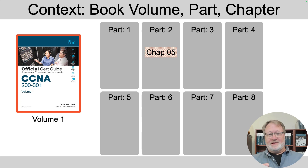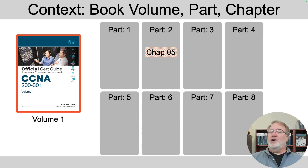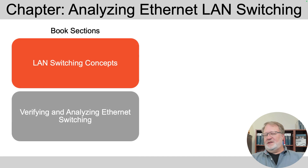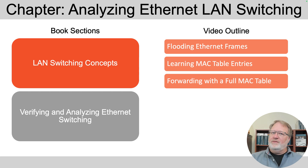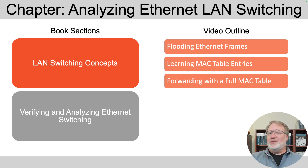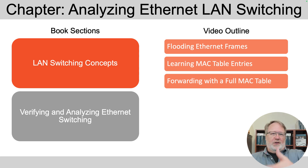Let me set the context. These videos always follow the outline of my Cisco Press CCNA books. This video happens to match Volume 1, Part 2, Chapter 5's first section. You can see the section titles from the book there on the left. In this video, I'm going to reverse the order versus the book and talk about flooding first, which is interesting because it turns out LANs won't work without that. Then about MAC learning, and finally about forwarding when those MAC addresses are learned, which is far more efficient.